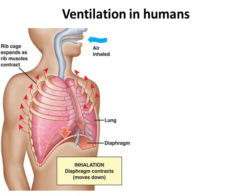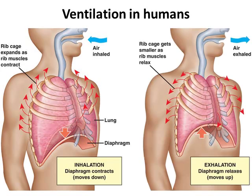We need to talk about how ventilation occurs — basically bringing air in and pushing air back out again. The first diagram shows inhalation: air comes in through the mouth, down the trachea and into the lungs. The internal intercostal muscles contract and pull the ribcage up and out. The diaphragm, the dome shape at the bottom, contracts and flattens slightly. The joint effect of these two contractions increases the volume of the thorax, which decreases the pressure inside, and air rushes in down a pressure gradient.